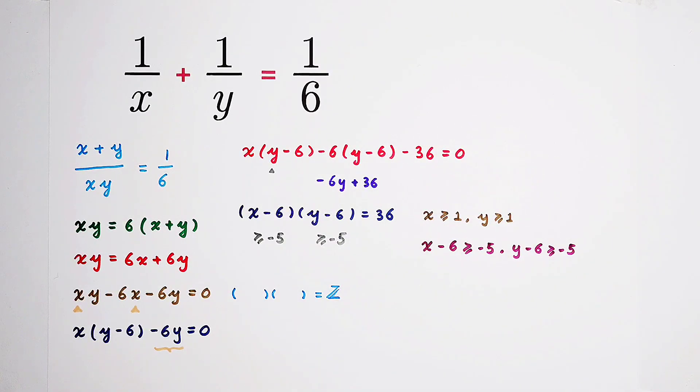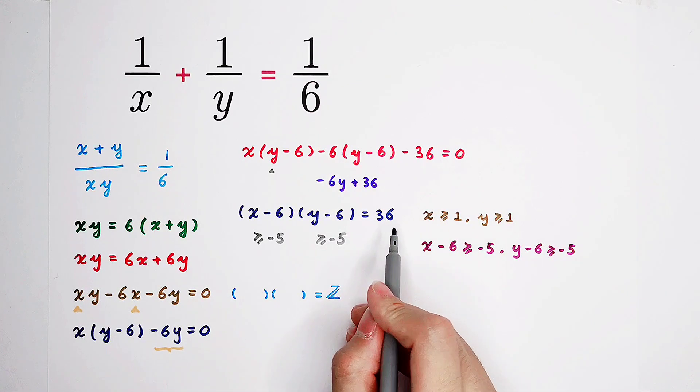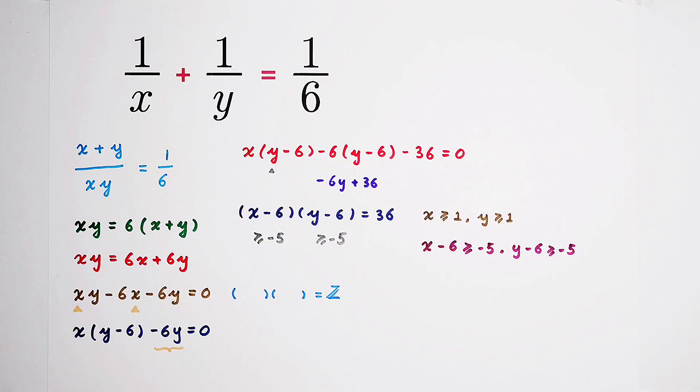However, we know that negative 5 times negative 5 is 25. It is smaller than 36. So it's not gonna be possible. So it's gonna be impossible to write 36 as a product of two negative numbers in this situation. Because negative 5 times negative 5 is smaller than 36.